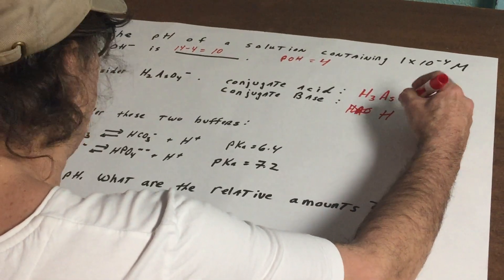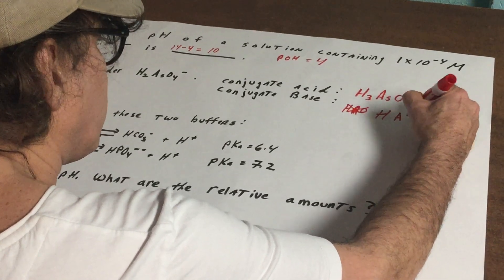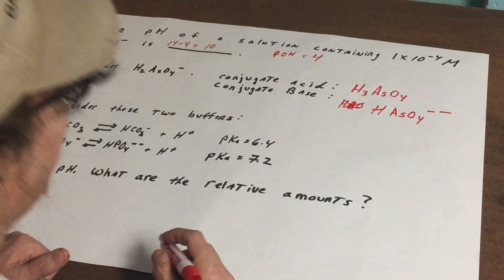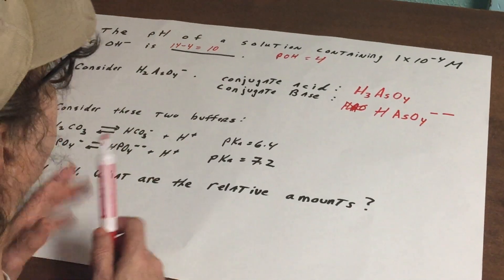So that should be, and we put in two minuses, so we get HAsO4^2-.